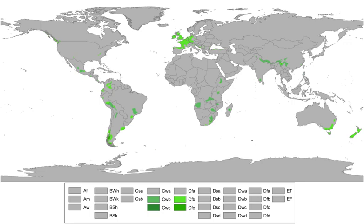It is the predominant climate type across much of Western Europe including the United Kingdom, the Pacific Northwest region of the United States and Canada, portions of Central Mexico, Southwestern South America, Southeastern Australia including Tasmania, and New Zealand, as well as isolated locations elsewhere.